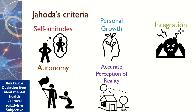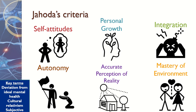The fifth criterion is accurate perception of reality — simply having an understanding of how the world behaves and having an accurate perception of that. The sixth criterion, mastery of the environment, includes the ability to love — whether in a romantic relationship or loving your family — the ability to function at work and school, and the ability to hold relationships and adjust to new situations without struggling to do so.